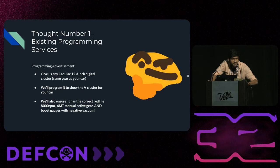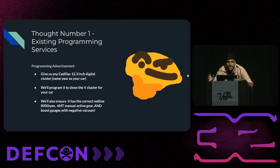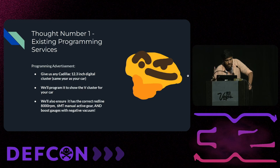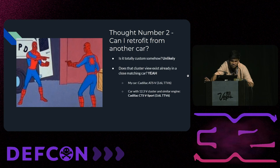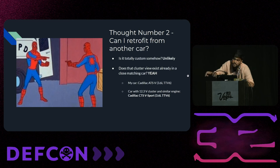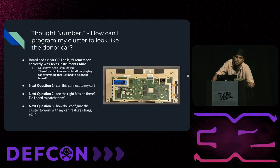Let's say you're me — you have this car and you want to retrofit this cluster. The programming advertisements will tell you: get any 12.3-inch cluster from any Cadillac from the same year, and they'll program it to show the V cluster view with the correct redline and everything. There's no way they made the graphics themselves. There was a car with the same engine that could show the right view — the Cadillac CTS V-Sport. So I just had to get a 12.3-inch cluster from any car, make it show that specific car's view, and put it into my car. I bought a cluster from a 2017 Escalade and had to make it show the view for the 2017 Cadillac CTS V-Sport.